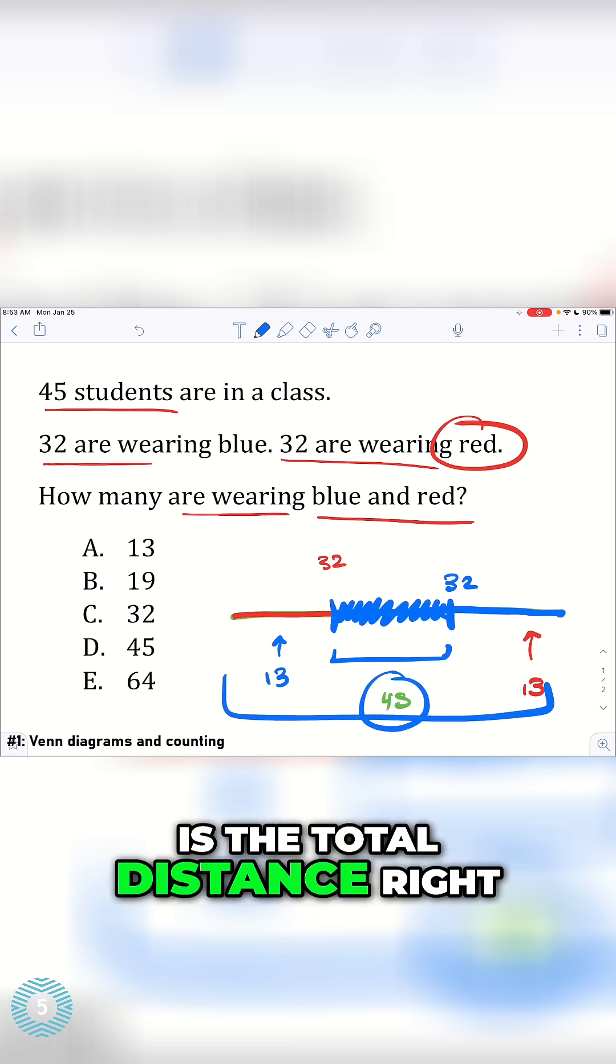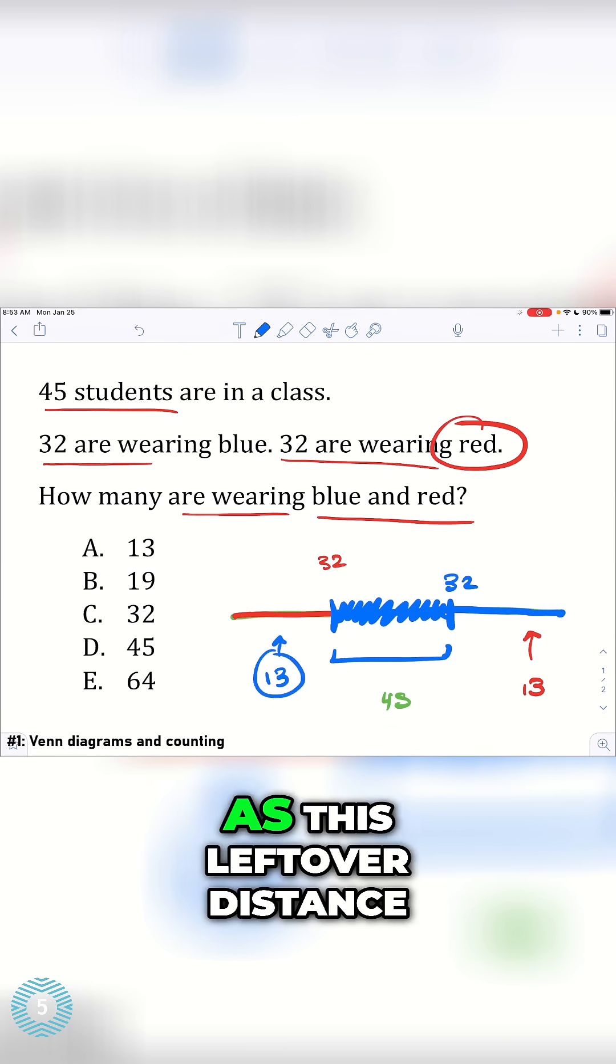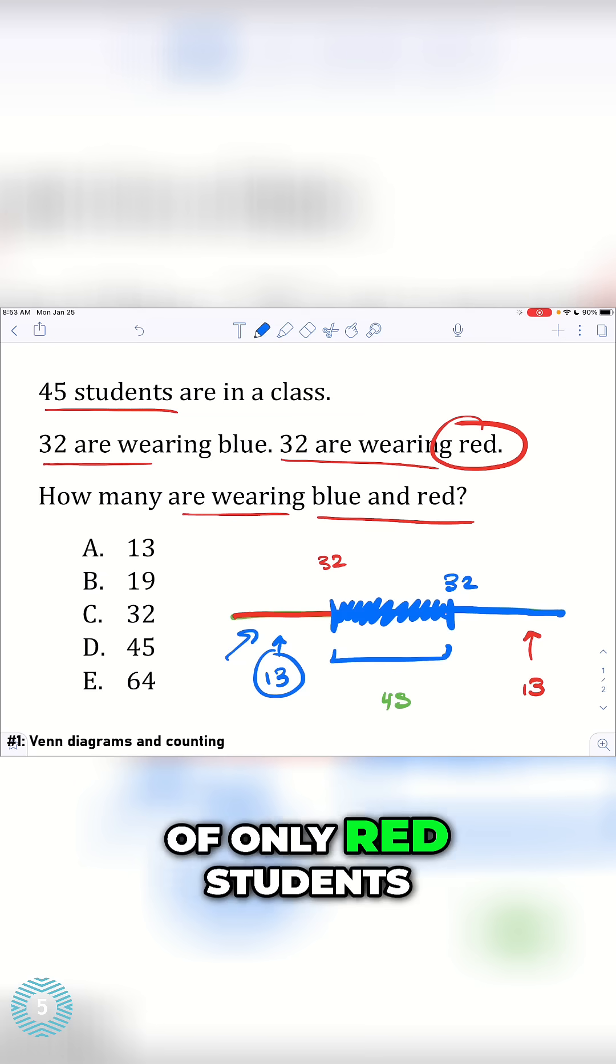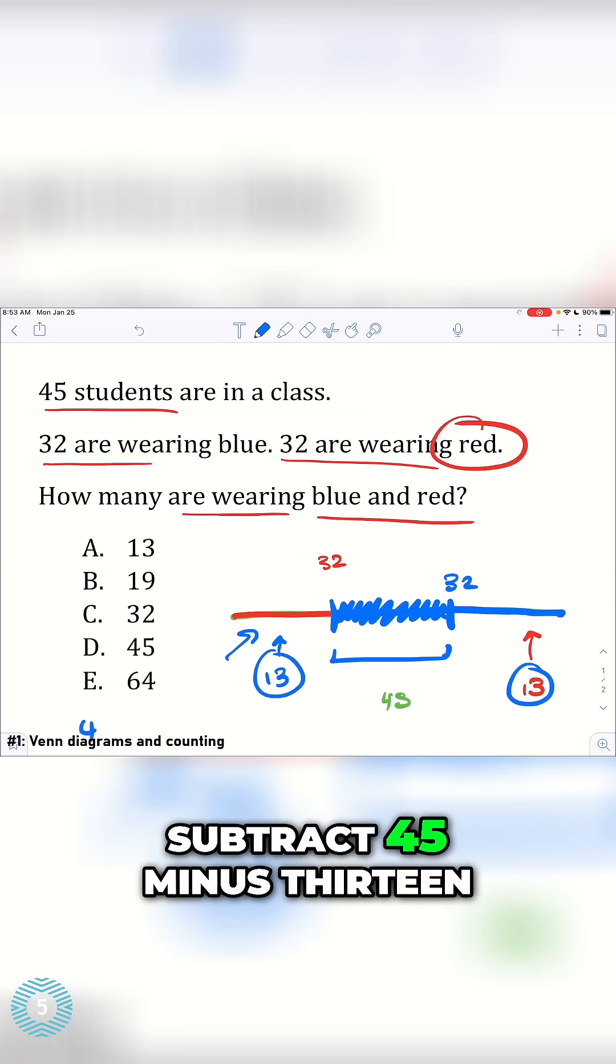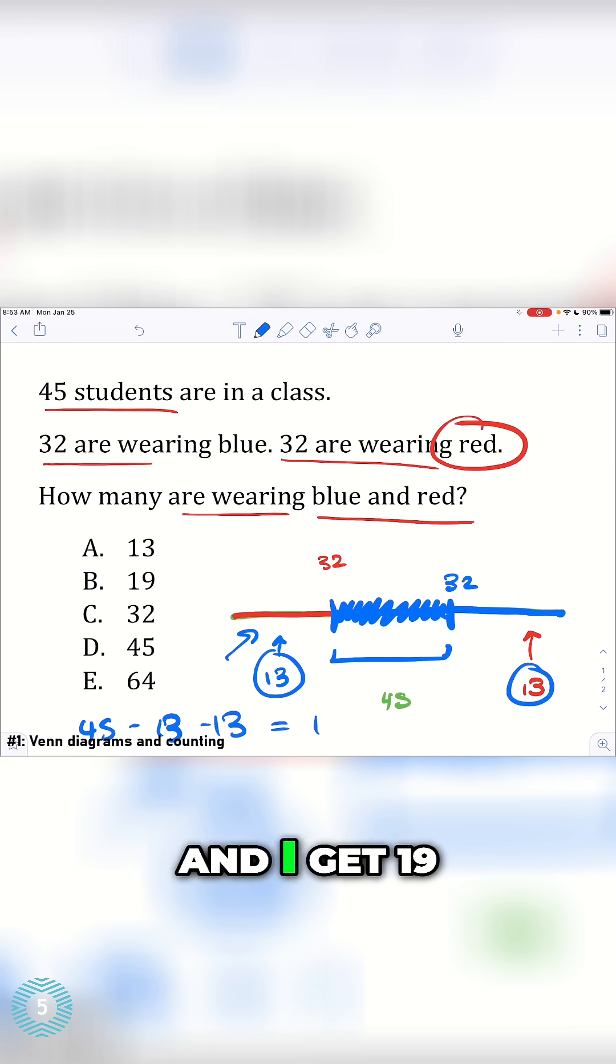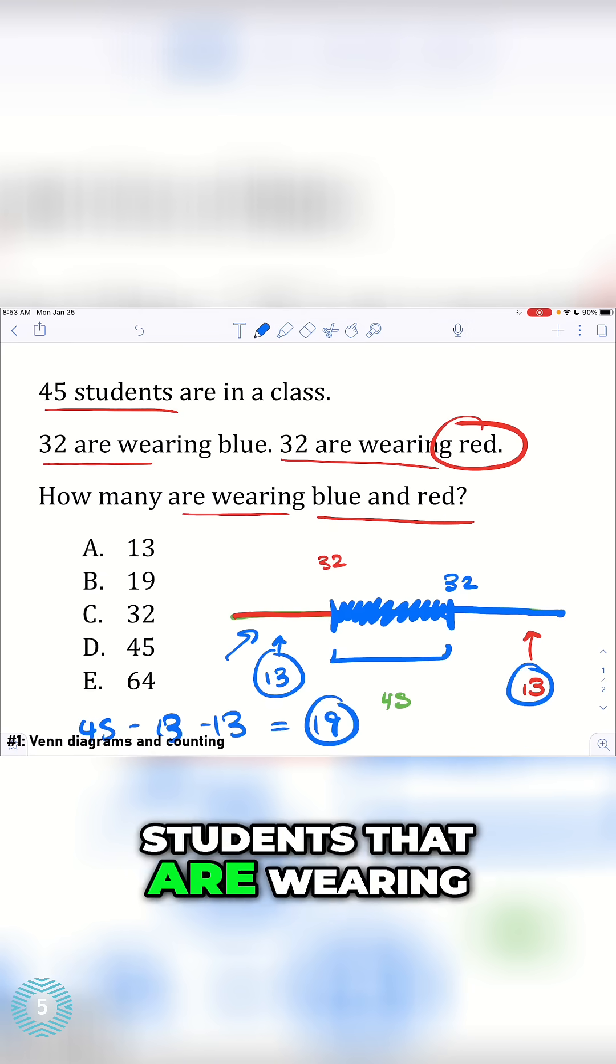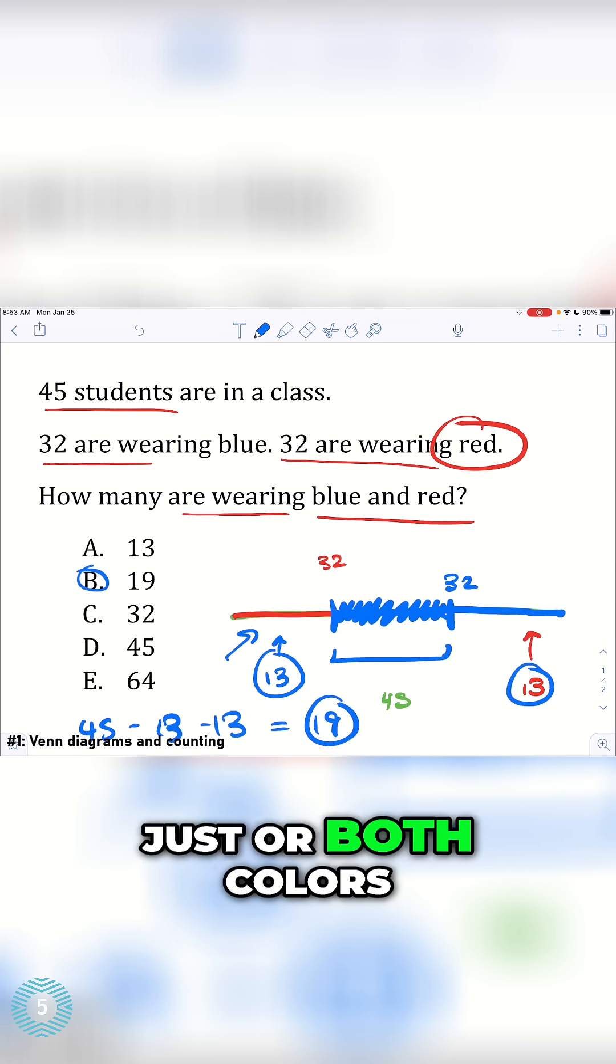Well, I have 45 as the total distance. And then I have 13 as this leftover distance of only red students. And then this distance right here of 13 is also the only blue students. So I can just subtract 45 minus 13 minus 13, and I get 19 as the number of students that are wearing both colors.